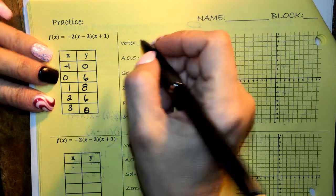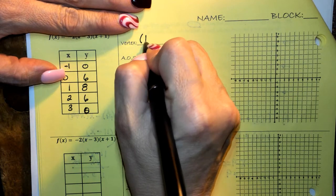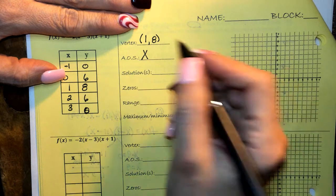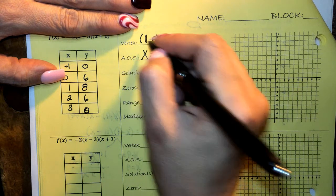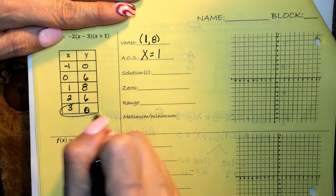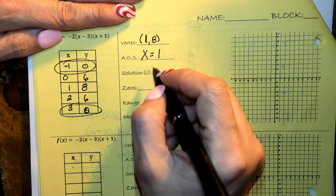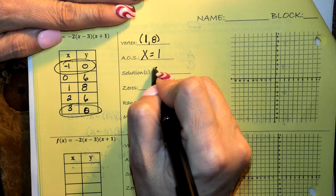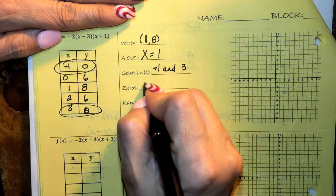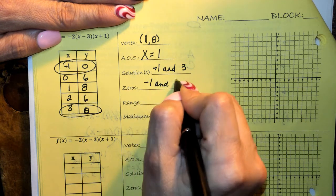Okay, that's really all I need. So I can see the vertex is at 1, 8, which means the axis has the letter x in it, is at 1. It's wherever this is. The solutions, what are the zeros? Well, I can see those right here. The solutions are at negative 1 and 3. The zeros are negative 1 and 3.